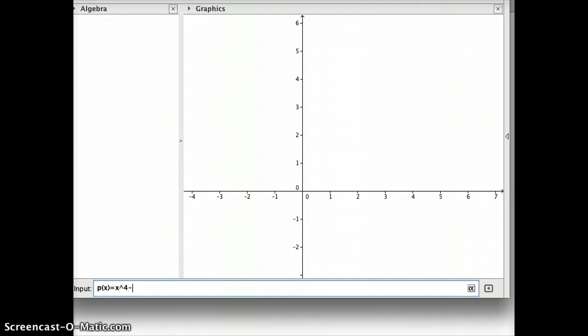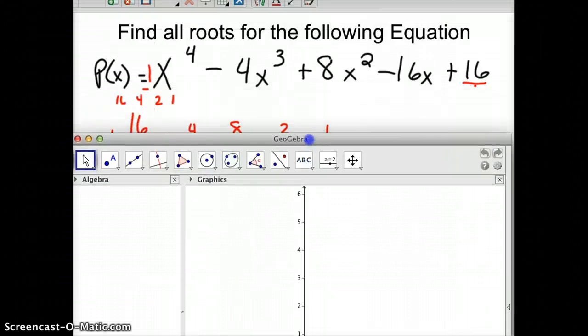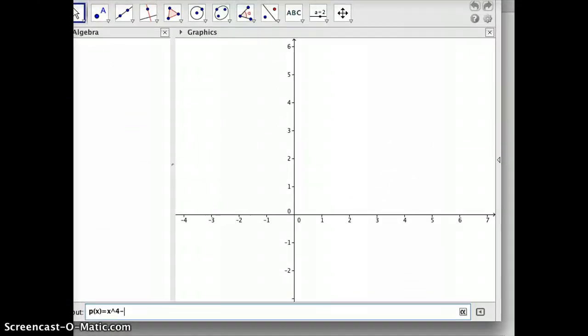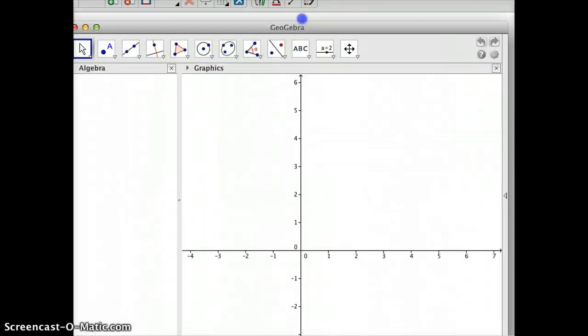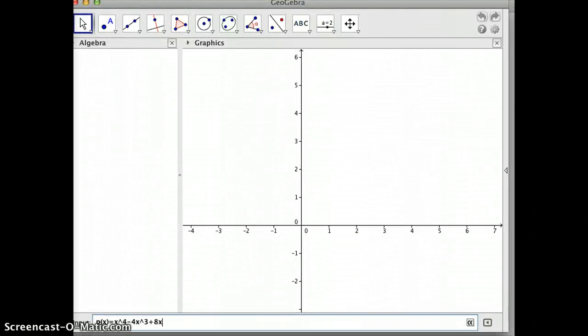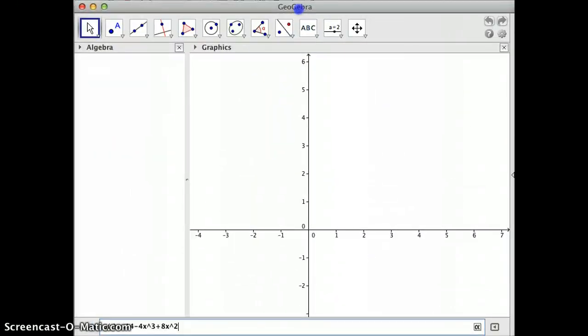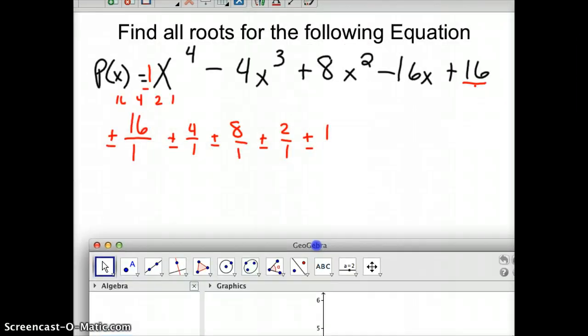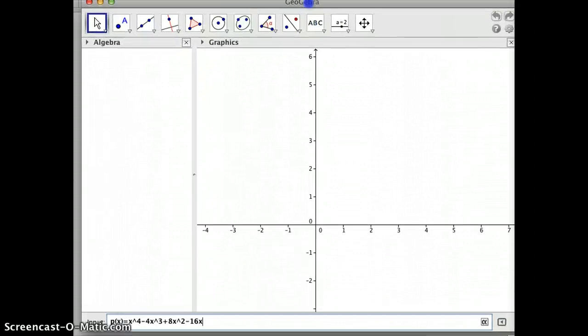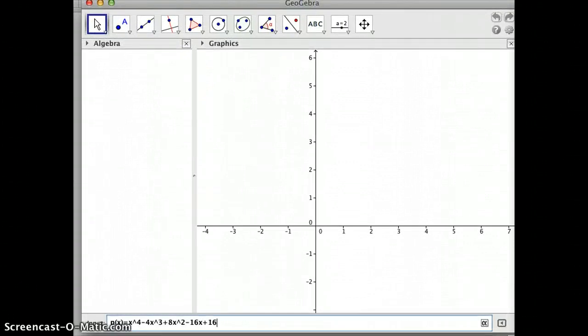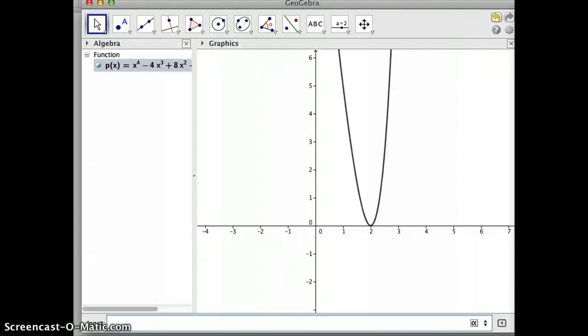X to the 4th minus 4x cubed, 4x cubed, plus 8x squared, minus 16x, plus 16. Hopefully I've got that done. Let's get it entered. There's the graph of what it looks like.